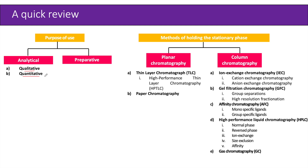Analytical chromatography is usually done using planar chromatography, whereas preparative chromatography uses column chromatography. Based on the method of holding the stationary phase, chromatography is categorized as planar or column chromatography. Planar chromatography includes thin layer chromatography and paper chromatography — thin layer also has a variant called high performance thin layer chromatography (HPTLC). Column chromatography includes ion exchange chromatography (cationic and anionic types) and gel filtration chromatography, which can perform group separations or high-resolution fractionation based on differences in molecular size.